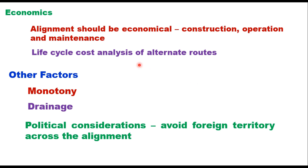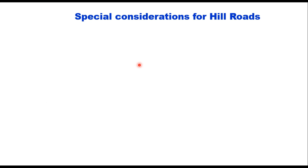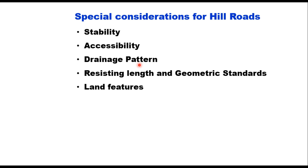When dealing with hill road alignment, certain special considerations apply. These include stability, accessibility, drainage pattern, resisting length, geometric standards, and land features.